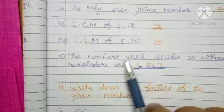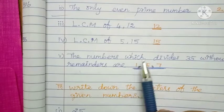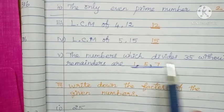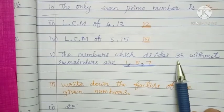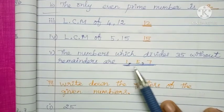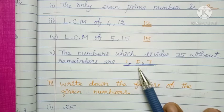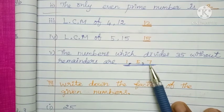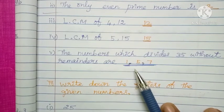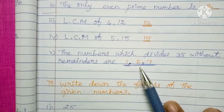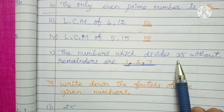The 5th one: the number which is divided by 35 without remainder. 35 is coming for 1 table, 5 table and 7 table. 7, 5's are 35; 5, 7's are 35. Use the table — 7 table, 5 table and 1 table. This is divisible by 35 without remainder.